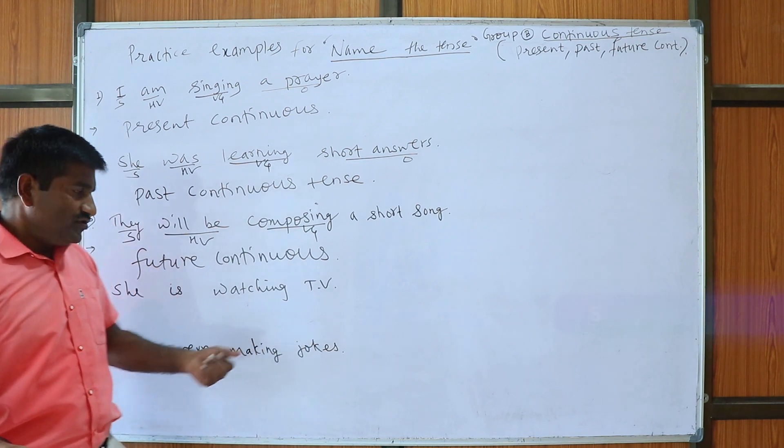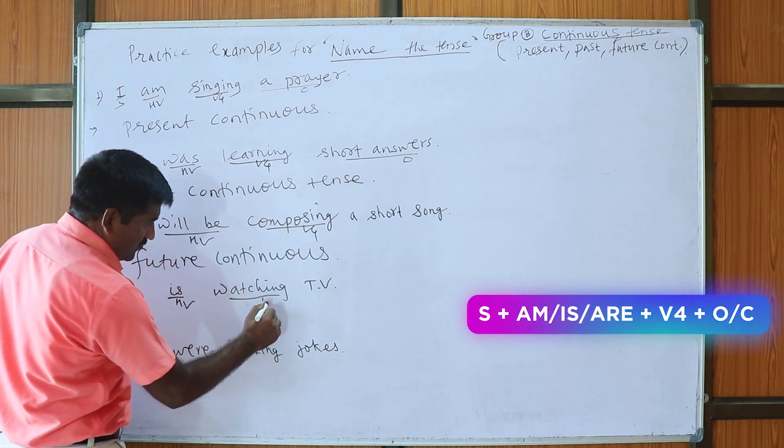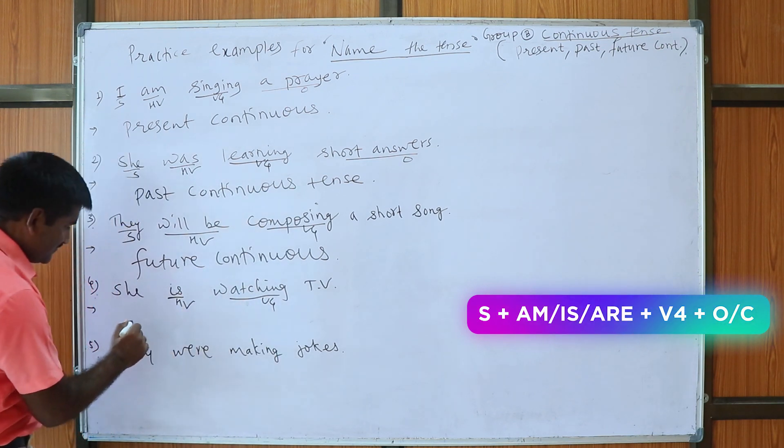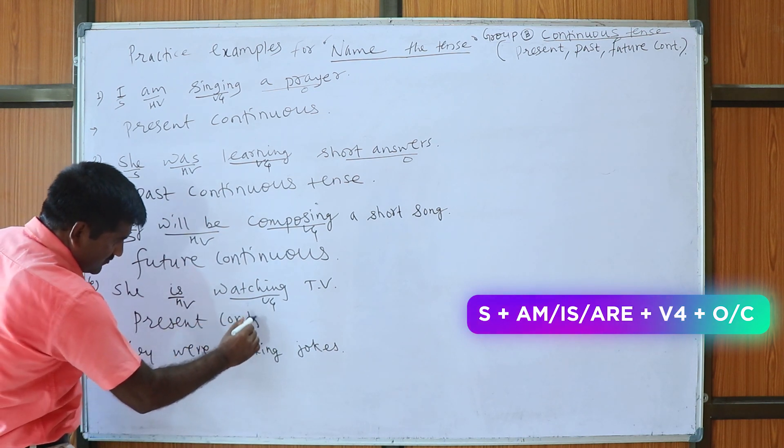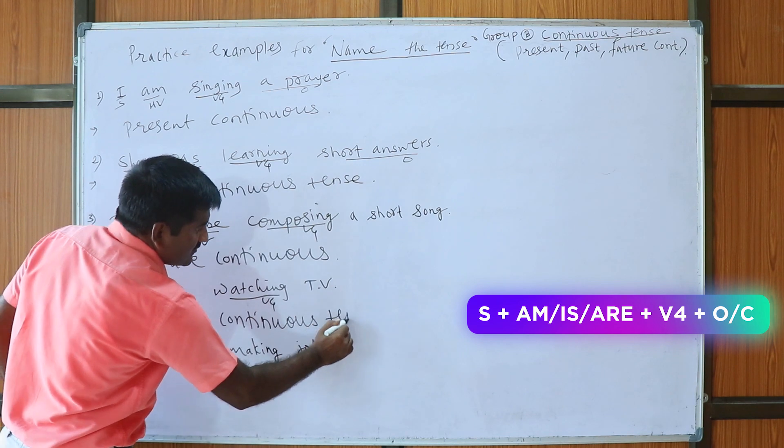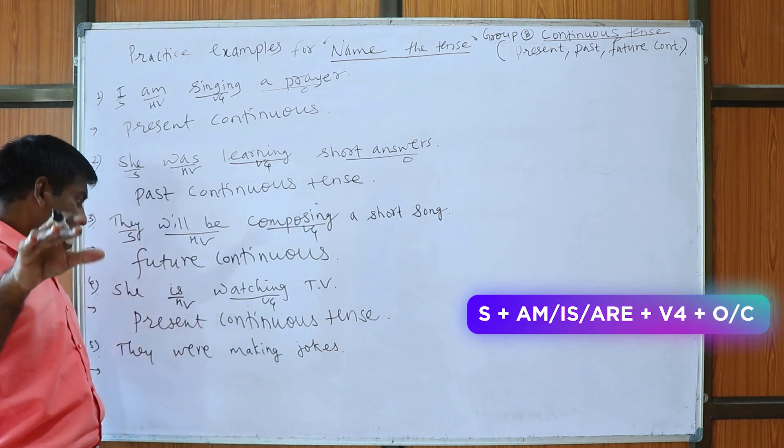She is watching TV, so here, this is the helping verb and this is V4, so Am/Is/Are plus V4, Am/Is/Are plus V4 is called as present continuous tense. So present continuous tense, therefore I kindly request that you must watch my all videos regarding tenses, so you will get command to solve both topics like name the tense and change the tense.